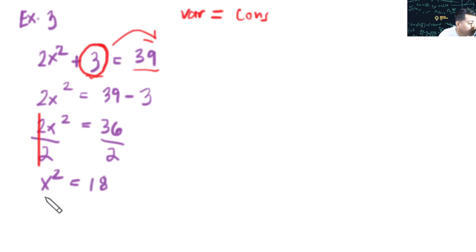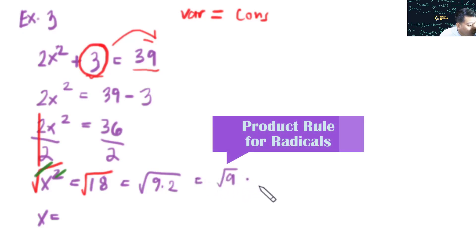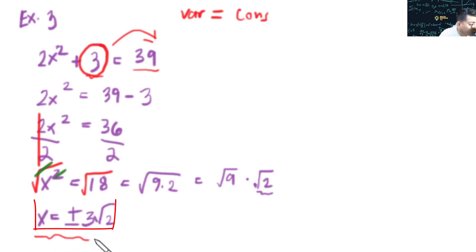Now x² = 18, so we take the square root of both sides. √18 can be written as √(9 × 2) = √9 · √2. Since √9 = ±3, our final answer is x = ±3√2.